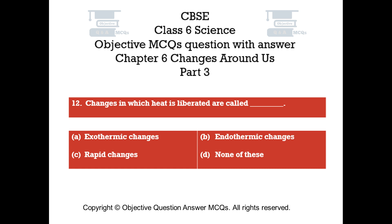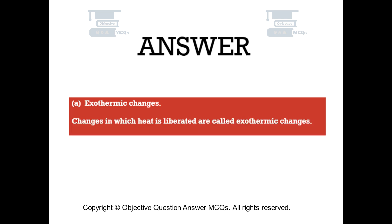Question number 12. Changes in which heat is liberated are called: Option A, exothermic changes. Option B, endothermic changes. Option C, rapid changes. Option D, none of these. The right answer is option A — changes in which heat is liberated are called exothermic changes.